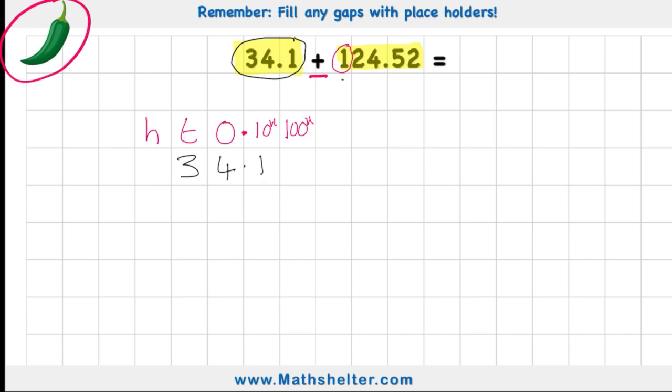And my next number is 124.52. So 100, two tens, four ones, my decimal back, five-tenths and two-hundredths. Now if we look at the top, it says remember to fill any gaps with placeholders. And I can see I have a gap here, and I have a gap just here. And a placeholder is just a zero.